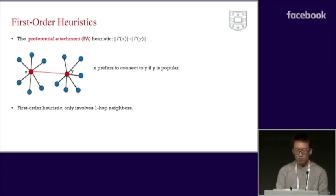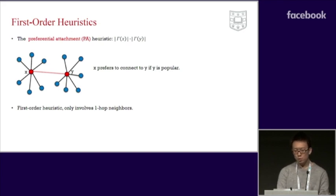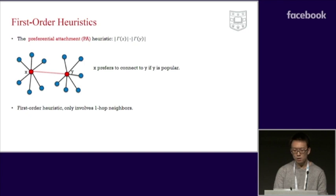The second one, the preferential attachment heuristic, predicts links by the product of x and y's degrees. It assumes that x prefers to connect to y if y is popular. It is also a first-order heuristic.